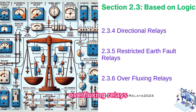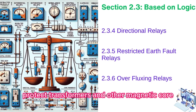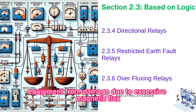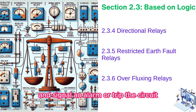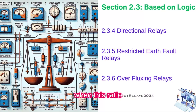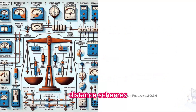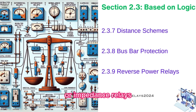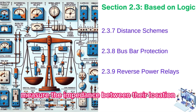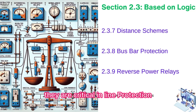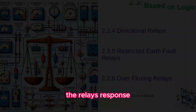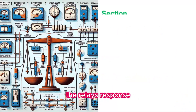Overfluxing relays protect transformers and other magnetic core equipment from damage due to excessive magnetic flux. They monitor the voltage-to-frequency ratio and signal an alarm or trip the circuit when this ratio exceeds safe limits. Distance relays, or impedance relays, measure the impedance between their location and a fault. They are critical in line protection where the fault's distance determines the relay's response.